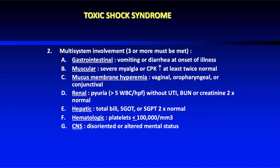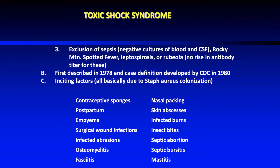The next criterion is multi-system involvement — at least three systems must be affected. These include gastrointestinal, muscular, mucous membrane hyperemia, renal, hepatic, hematological, and CNS neurological changes. Additionally, sepsis must be excluded, typically through blood cultures, lumbar puncture, and blood antibody testing.